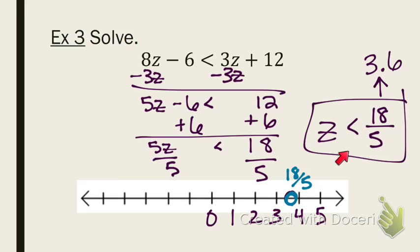So we have an open circle at 18 fifths. And I want all the numbers less than 18 fifths. Less than means you lie to the left.